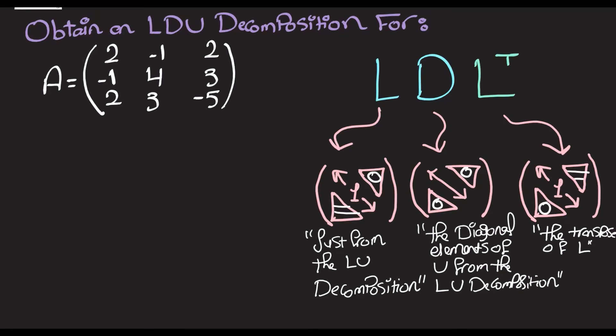For this example we've got the matrix A and we're going to do an LDU decomposition. Start by doing Gaussian elimination. Row one is going to be multiplied by half and then we add that to the second row. Row one is also going to be multiplied by negative one and then we add that to the third row.